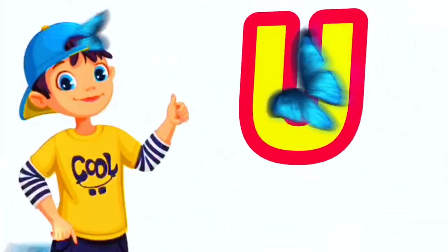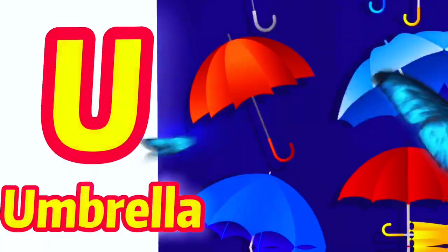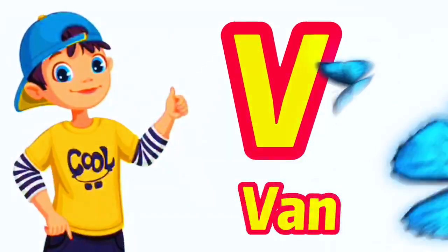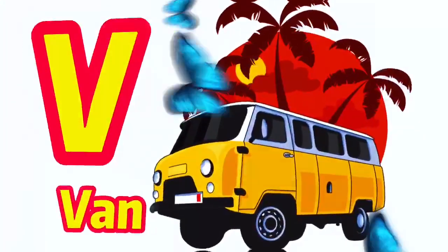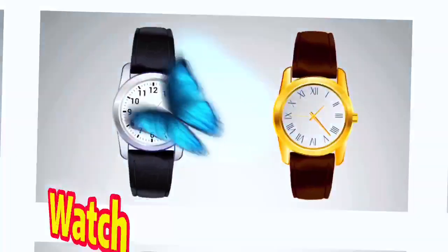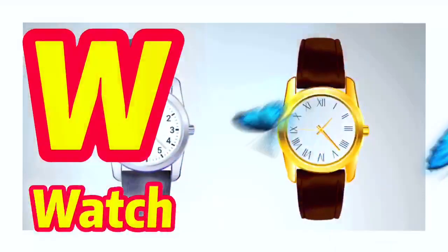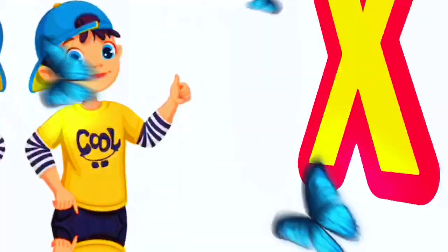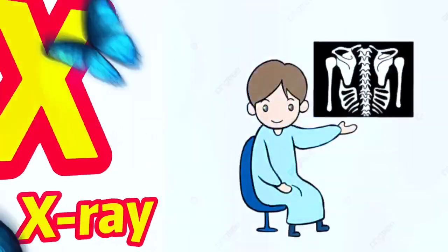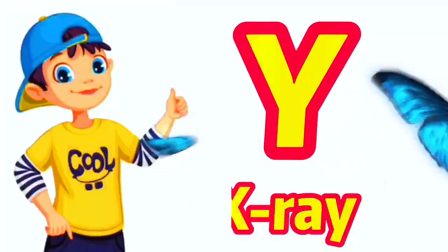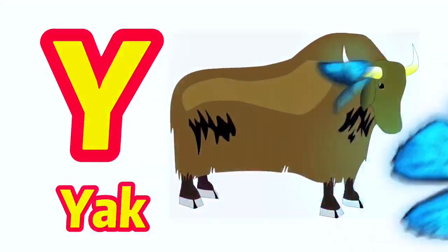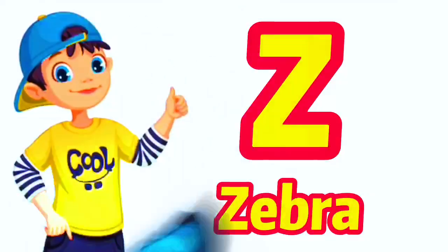U for umbrella, V for whale, W for watch, X for x-ray, Y for yak, Z for zebra.